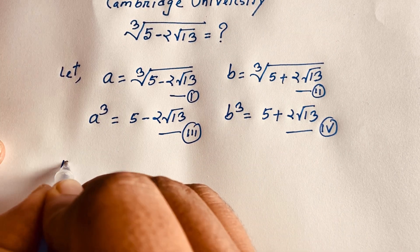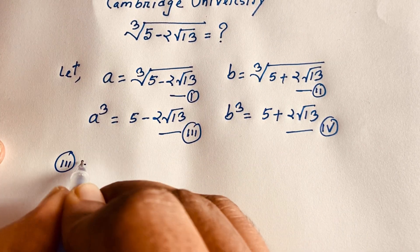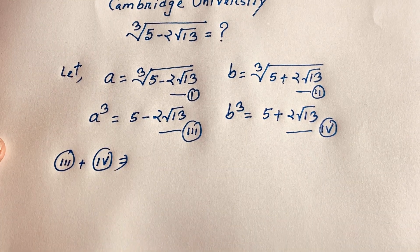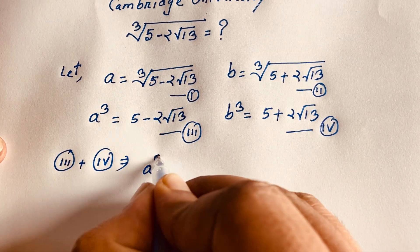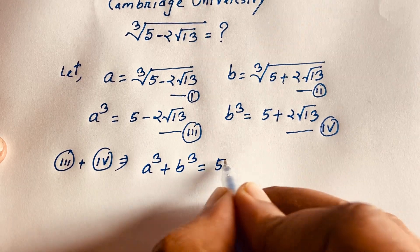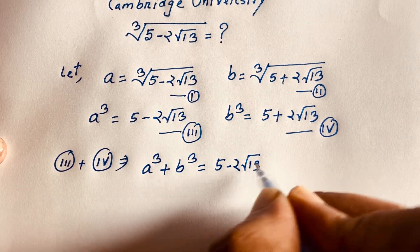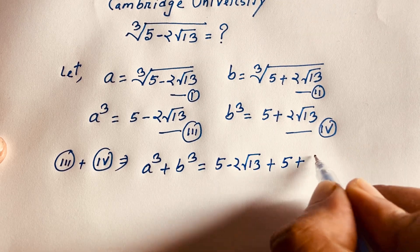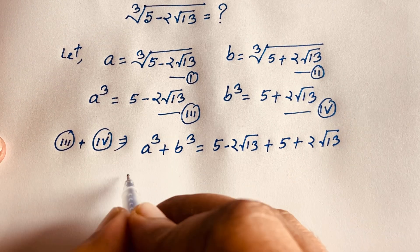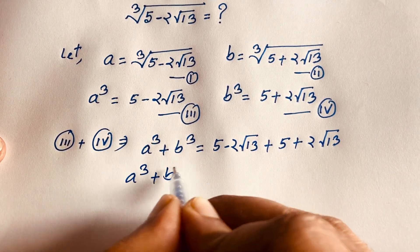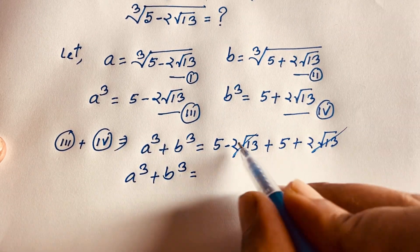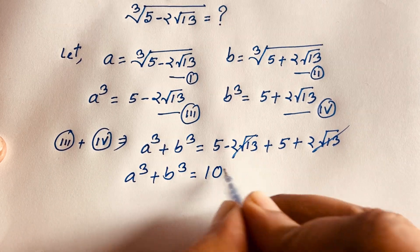Now if I add our third equation and fourth equation, I get a³ plus b³ equal to (5 minus 2 square root 13) plus (5 plus 2 square root 13). The square root 13 terms cancel out — positive and negative — so 5 plus 5 gives us 10. So a³ plus b³ equals 10. This is our fifth equation.